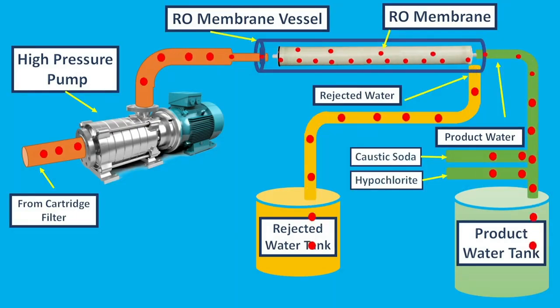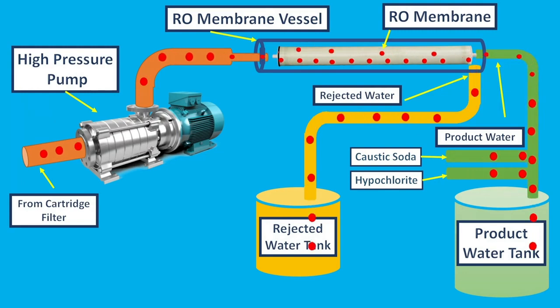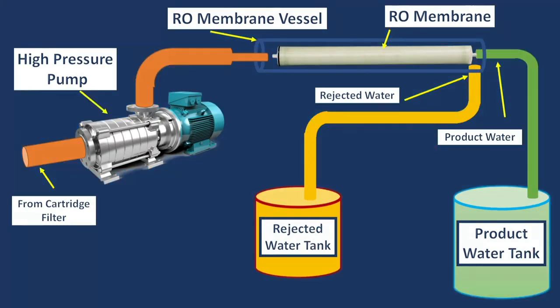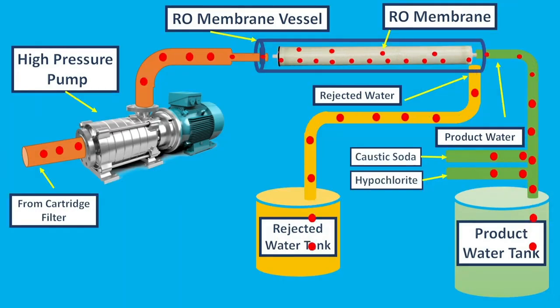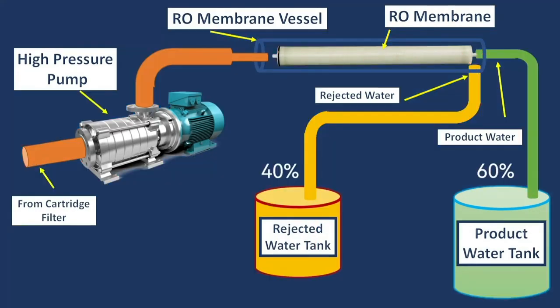Usually 60% of water is collected as filtered water and 40% goes to the reject tank. This is the normally designed percentage for a single-stage RO system by the manufacturer. For a two-stage RO system, this percentage is 70% and 30%. However, this percentage is changeable and can be adjusted as per requirements.